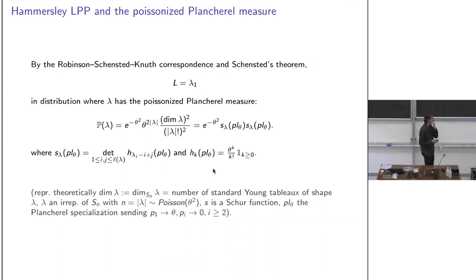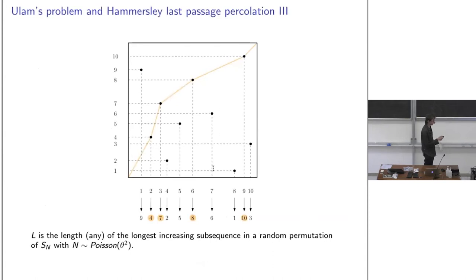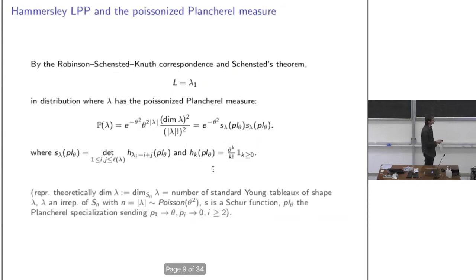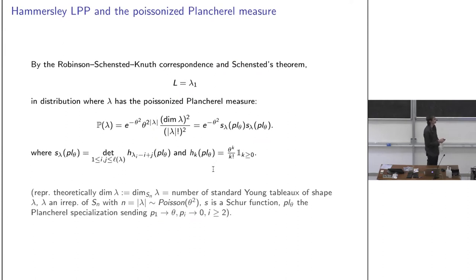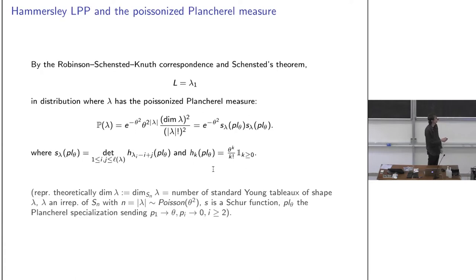A theorem states that L — the length of the longest polymer — is equal in distribution to the first part λ₁ of a partition drawn from the Plancherel distribution. This is one of the reasons the Plancherel distribution is important in mathematical physics and probability.